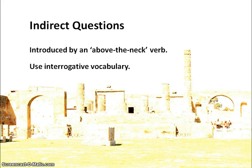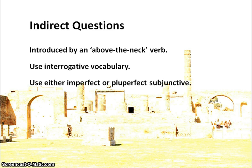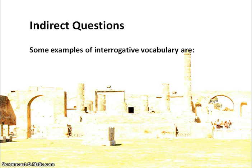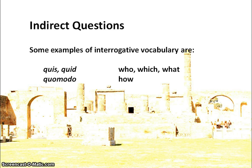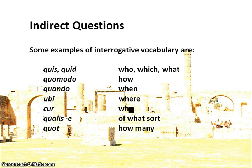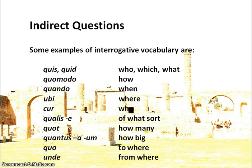In English, questions use words like how, who, what, when, where, why — Latin is exactly the same. It will also use the subjunctive, both imperfect and pluperfect. Examples of interrogative vocab are: quis meaning 'who/which', quid meaning 'what', quo modo meaning 'how', quando meaning 'when', ubi meaning 'where', cur meaning 'why', qualis meaning 'of what sort', quot meaning 'how many', quantus meaning 'how big', quo meaning 'to where', and unde meaning 'from where'.